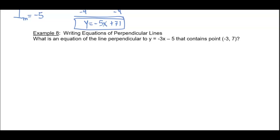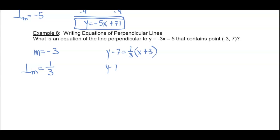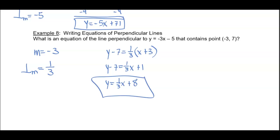Another perpendicular line example: What is the equation of a line perpendicular to y equals negative 3x minus 5 that contains the point (negative 3, 7)? The slope is negative 3, so the perpendicular slope — the opposite reciprocal — is 1 over 3. Using point-slope: y minus 7 equals one-third times (x plus 3). Distributing: y minus 7 equals one-third x plus 1. Adding 7 to both sides: y equals one-third x plus 8.